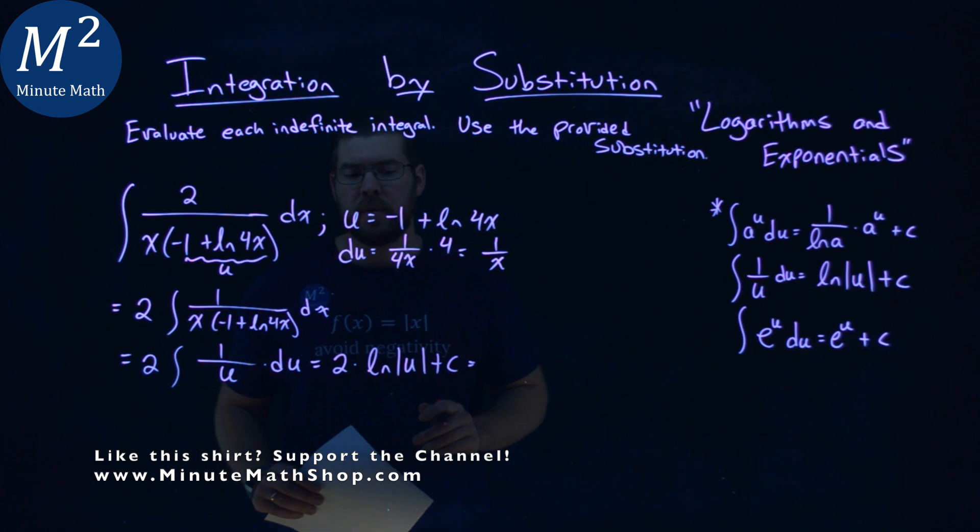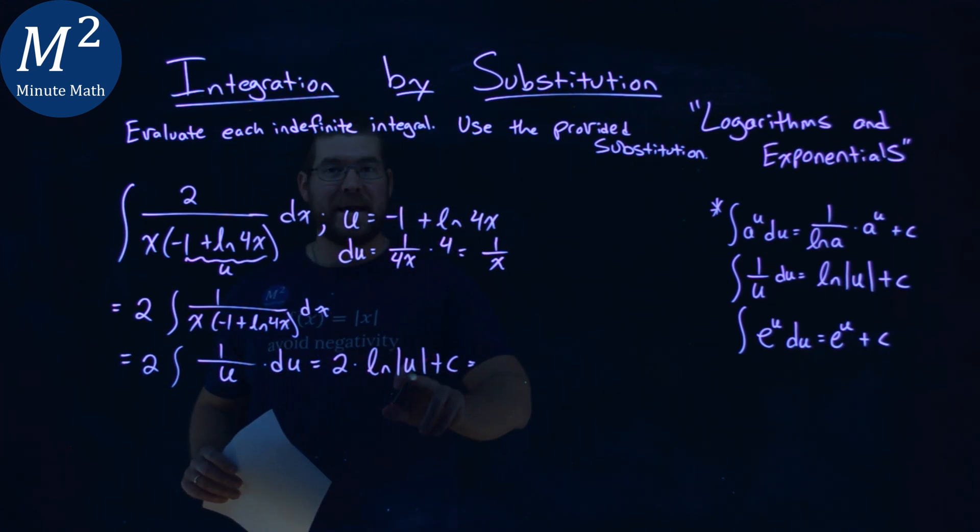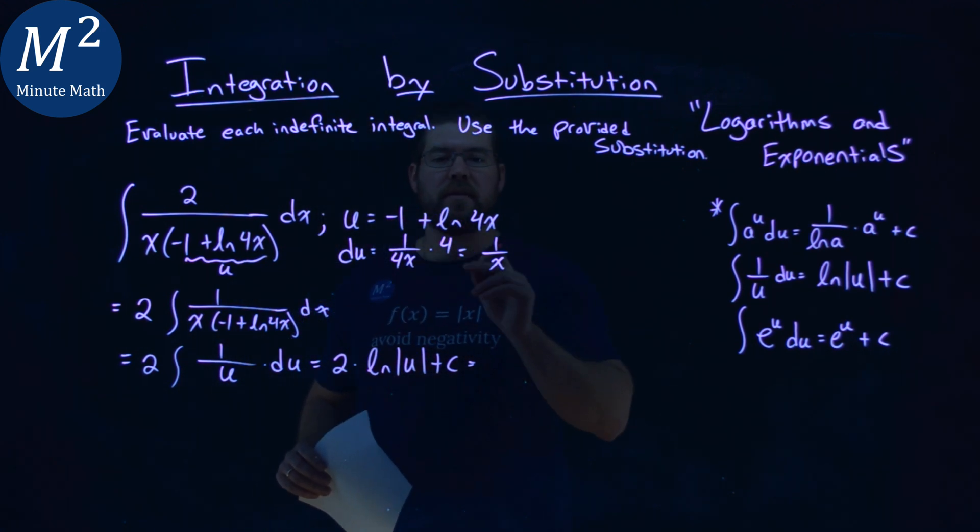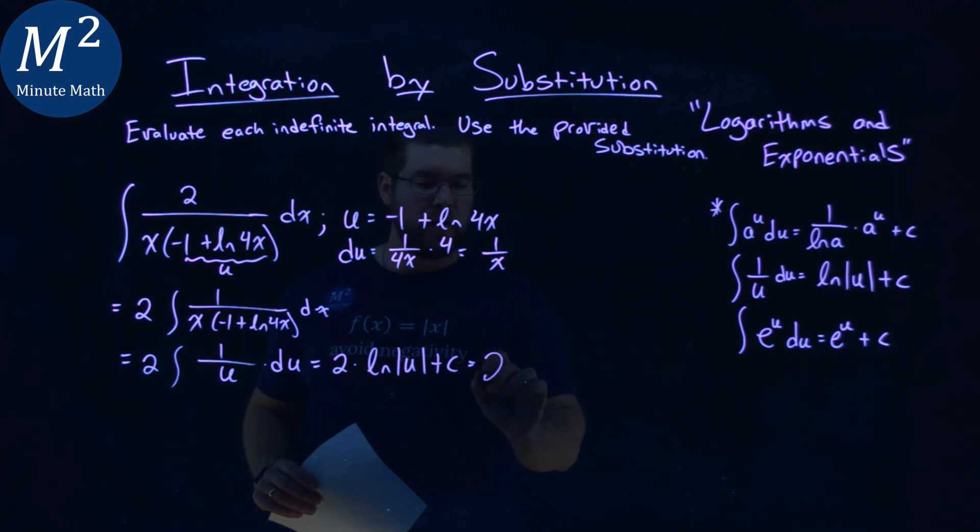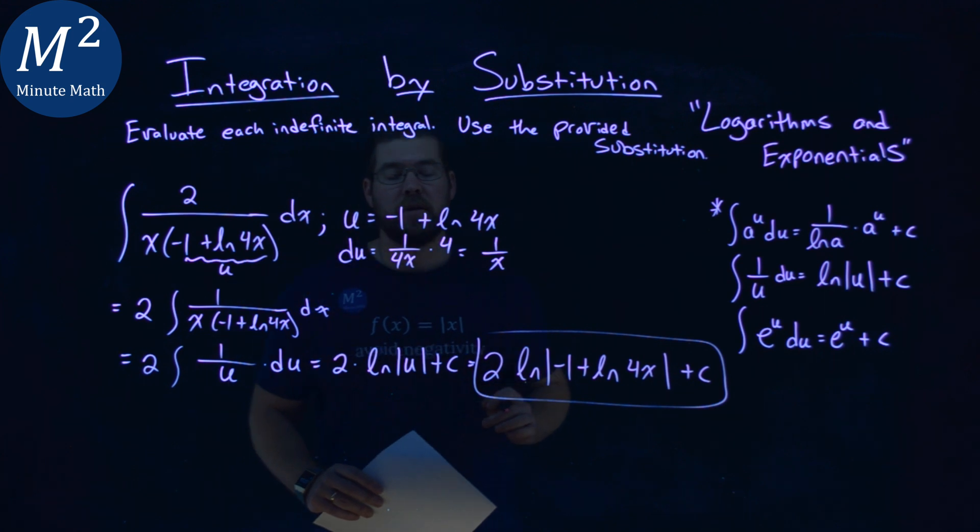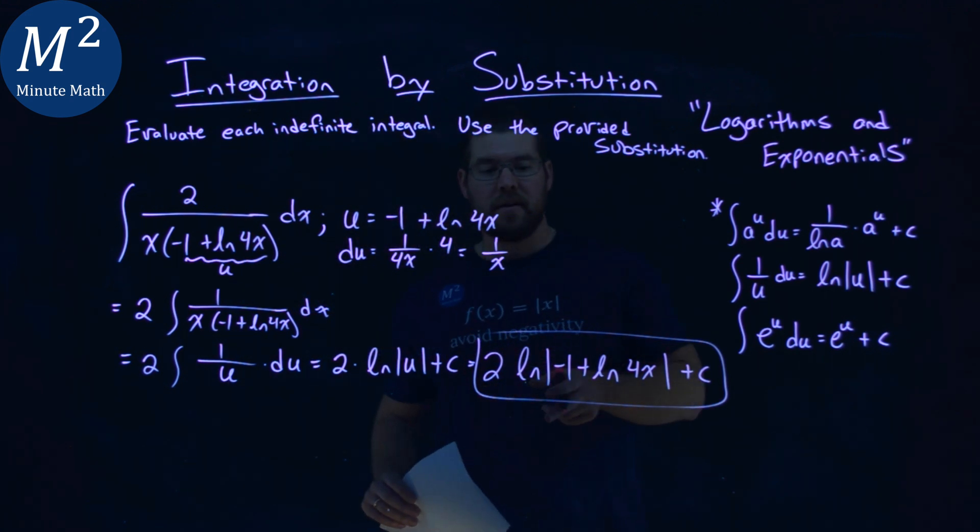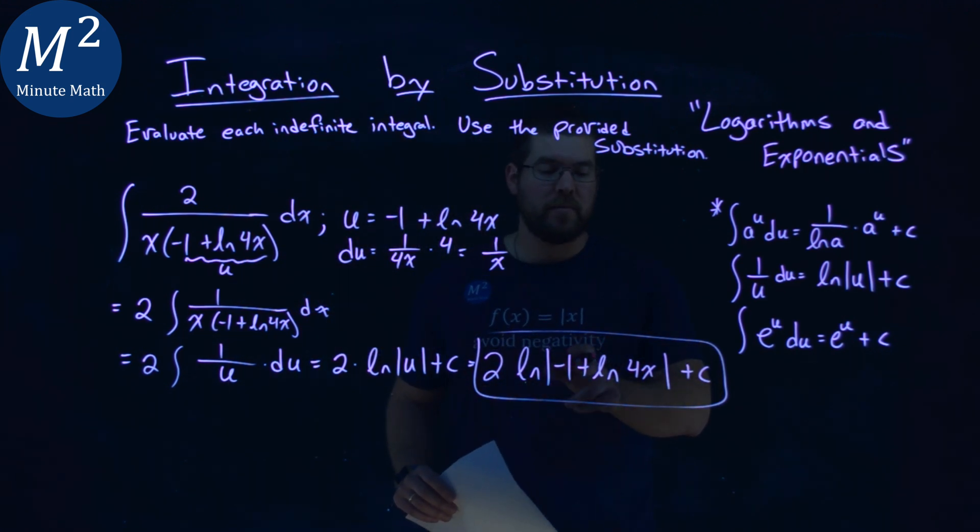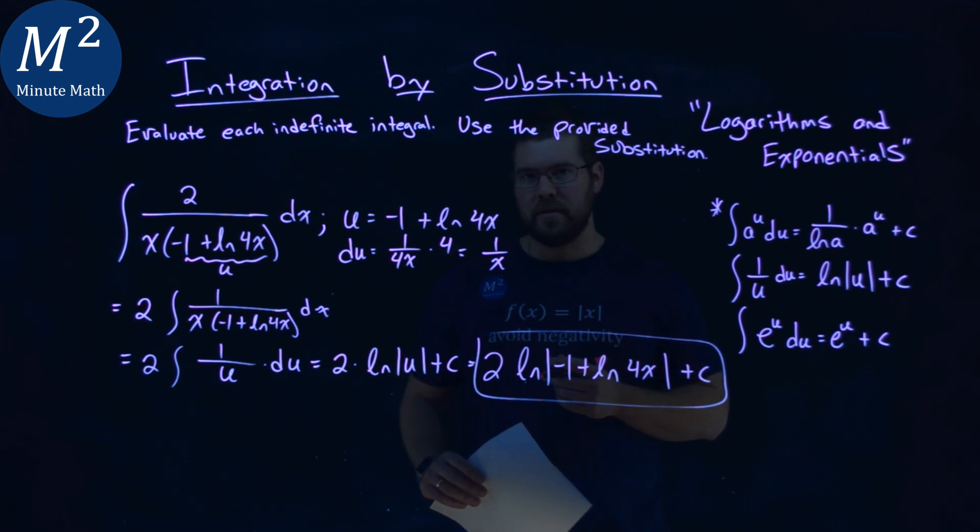And we're almost there. We just need to plug our u value back in. We have negative 1 plus natural log of 4x. So 2 times the natural log, absolute value of negative 1 plus the natural log of 4x here, and then plus c. And so again, our final answer here is 2 natural log of the absolute value of negative 1 plus natural log of 4x plus c.